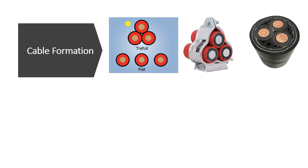In this lesson, we discuss the different types of cable formation. There are two main types: the flat type and the trefoil formation.